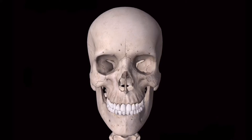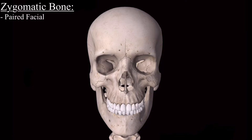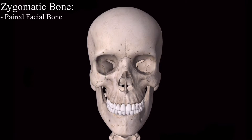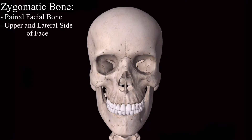In this video I will discuss the zygomatic bone in detail. The zygomatic bone is a paired facial bone, situated at the upper and lateral part of the face, forming the prominence of the cheek.